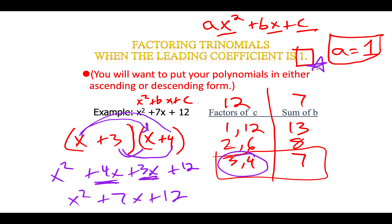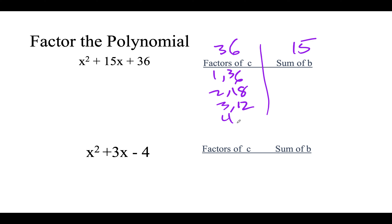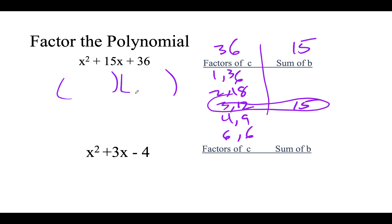When our leading coefficient is one we use this quick trick. For x squared plus 15x plus 36: factors of 36 with a sum of 15. I don't have to list them every time — maybe grab a calculator and start dividing. 1 and 36, 2 and 18, 3 and 12, 4 and 9, 6 and 6. Clearly 3 and 12 is my winner — sum of 15. Break it up: lead coefficient is 1, so it factors into (x + 3)(x + 12).